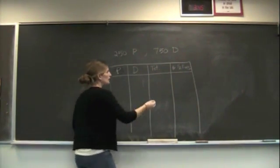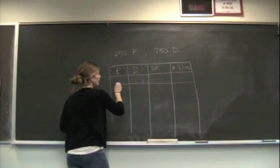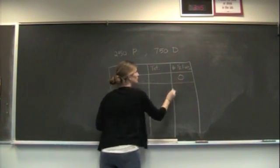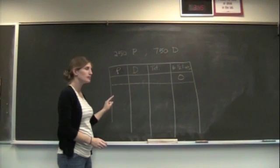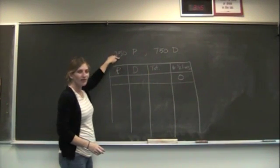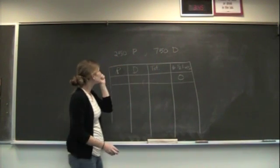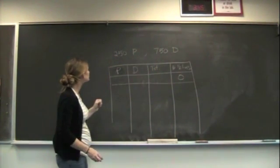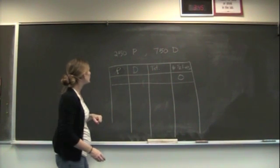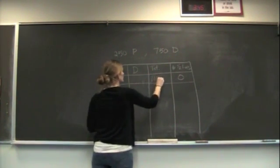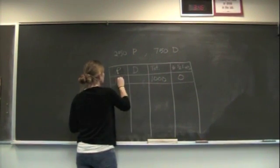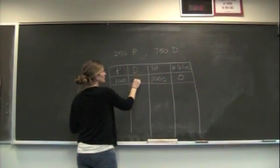At the very beginning, there have been zero half-lives that have passed. Everything has to be the parent, so I can get that number by taking 250 and adding it to 750. And that's going to be 1,000. We have zero of the daughter.